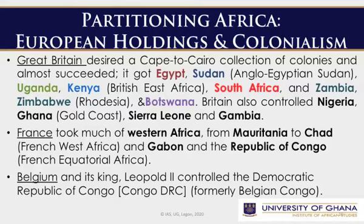Great Britain desired to have a collection of colonies from Cape in the south to Cairo in the north, and almost succeeded. They got Egypt, Sudan — then known as Anglo-Egyptian Sudan — Uganda, Kenya — also known as British East Africa — South Africa, Zambia, Zimbabwe — then known as Rhodesia — and Botswana. In West Africa, Britain also controlled Nigeria, Ghana — then known as the Gold Coast — Sierra Leone and Gambia.